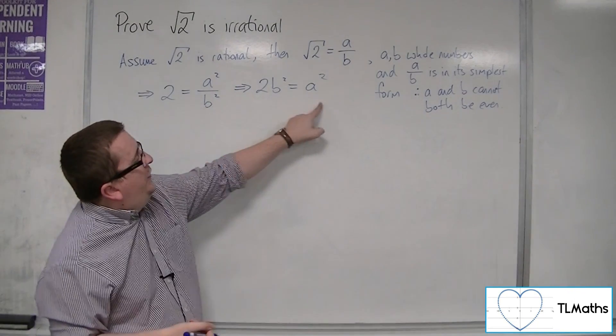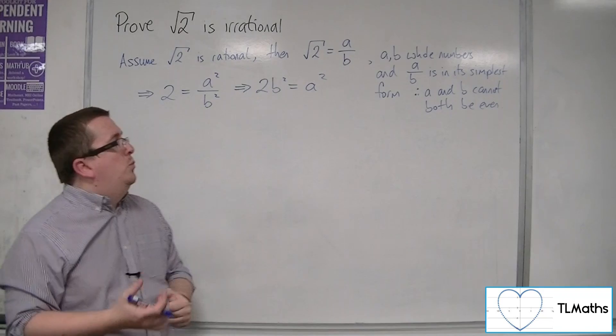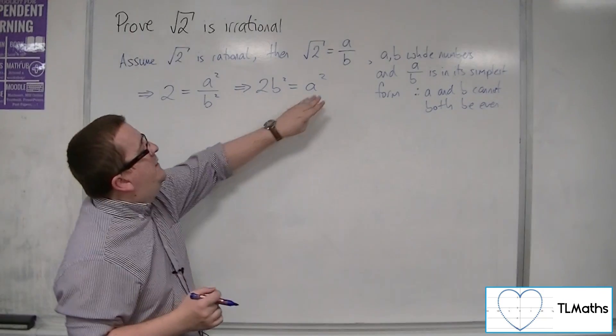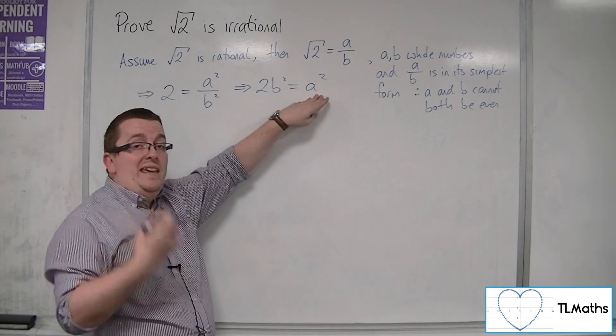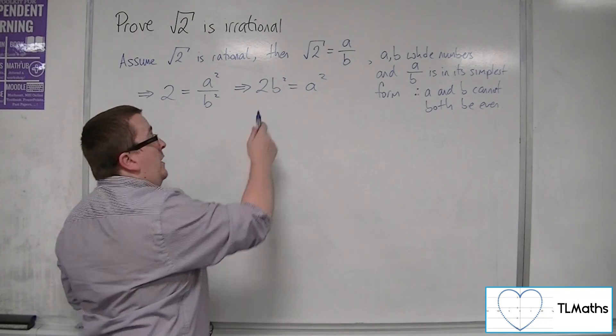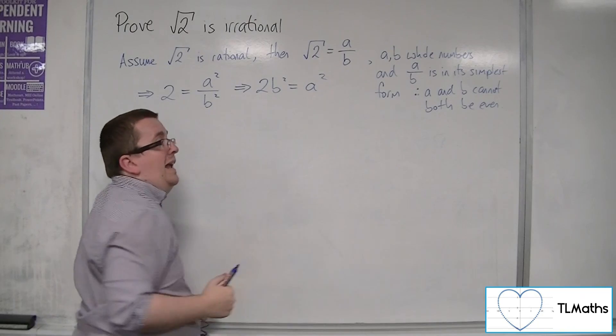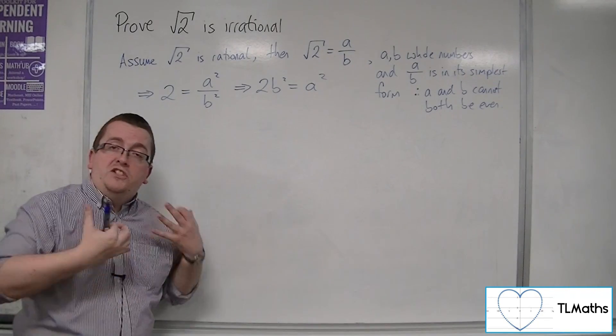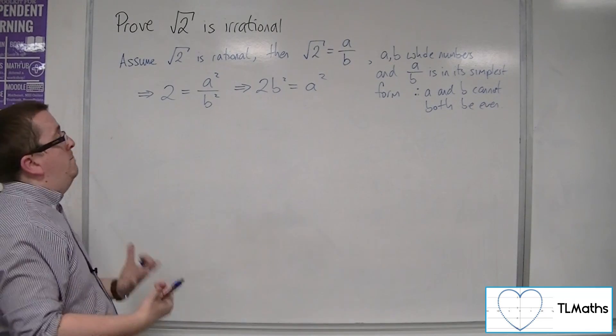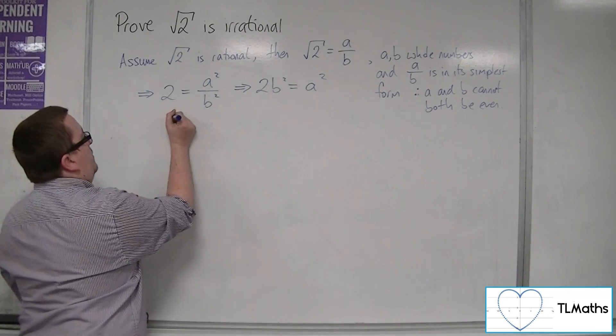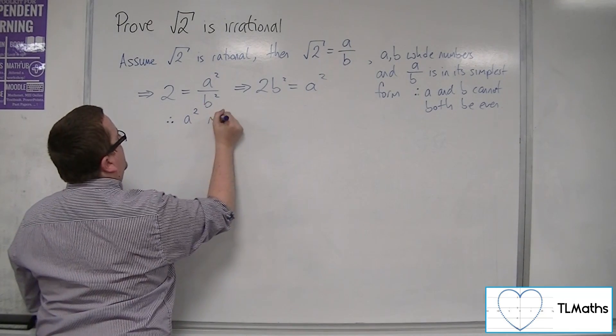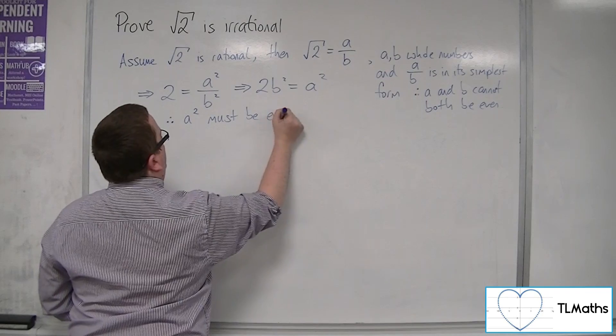Well, if this is the case, if 2b squared is equal to a squared, that must mean that a squared is even, because 2b squared is even, because 2 lots of some number is equal to a squared. So a squared must be divisible by 2, and so a squared must be even. So therefore a squared must be even.